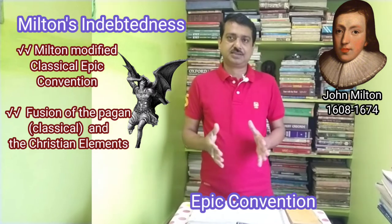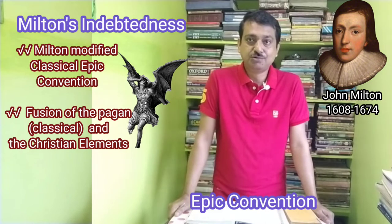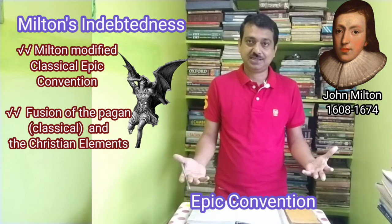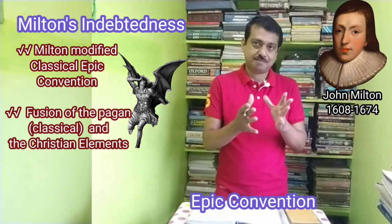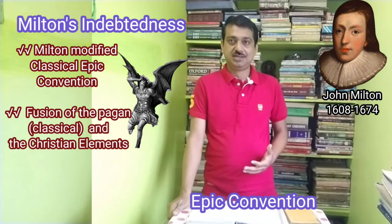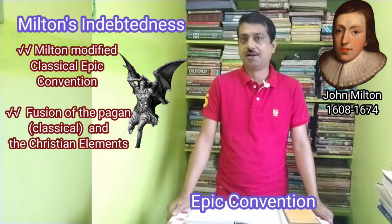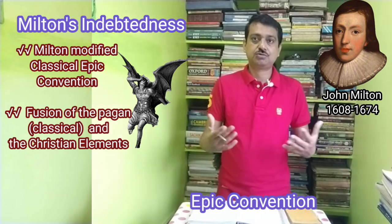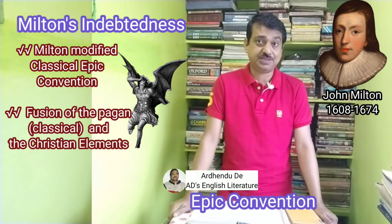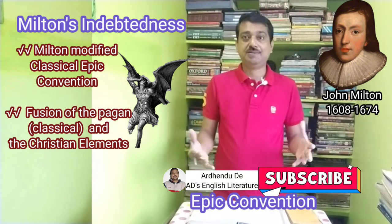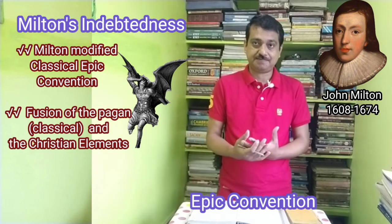John Milton's indebtedness to earlier poetry in his use of epic convention is the greatest exhibition he has done. His magnificent Paradise Lost is considered to be the first epic poem in the English language, derived from the theme of the Bible. Milton modified classic epic conventions of invocation in the first 26 lines of Paradise Lost, Book 1, to suit his own lofty purposes. His originality in the invocation is a fusion of pagan and Christian elements together.